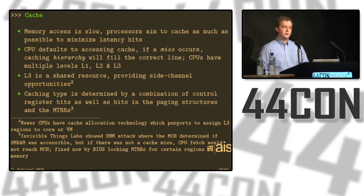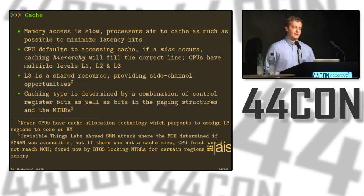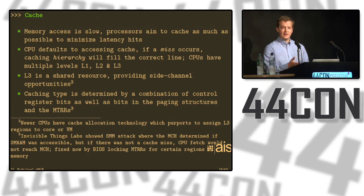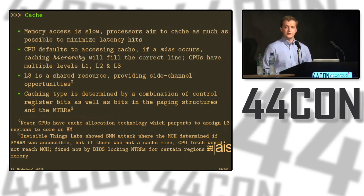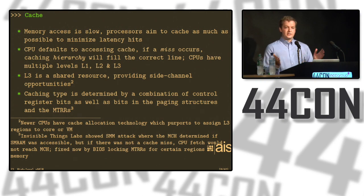Another feature is the cache. You should understand how it works even as a software developer, because by writing code that makes better use of the cache, you can massively improve performance. The CPU defaults to accessing cache — like a secretary who either has the file ready or goes to the filing room to get it. There's a hierarchy: level one is closest to the CPU, then level two, level three, and level four optionally. What's interesting about level three and optionally level four is it's a shared resource, so you'll see work with hypervisors using that across multi-core applications to get information from one process to another.